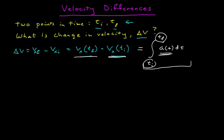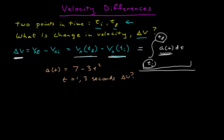We can calculate velocity differences as the definite integral of the acceleration over that interval. Let's do a simple example. I have some acceleration that is a polynomial: 7 minus 3t squared, and I want to know what is the change in velocity between t equals 1 and t equals 3 seconds. That change in velocity is the integral from 1 to 3 of the acceleration, which is 7 minus 3t squared dt.